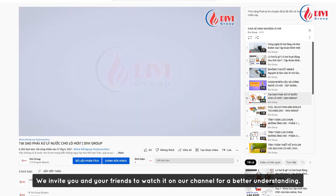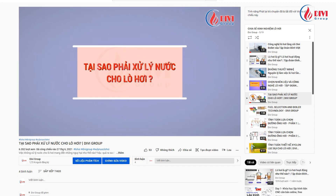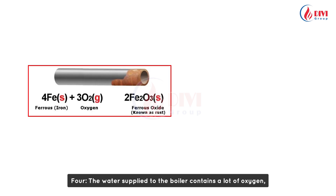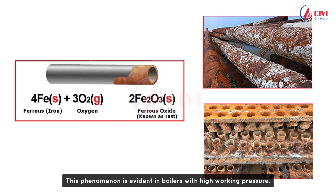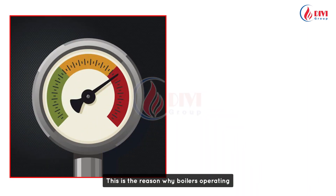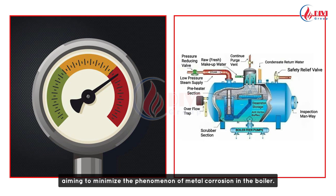We invite you and your friends to watch it on our channel for a better understanding. Fourth, the water supplied to the boiler contains a lot of oxygen, causing oxidation of the iron and steel and leading to corrosion inside the boiler. This phenomenon is especially evident in boilers with high working pressure. This is why boilers operating at high pressures are equipped with deaerators to remove oxygen from the feed water, aiming to minimize the phenomenon of metal corrosion in the boiler.